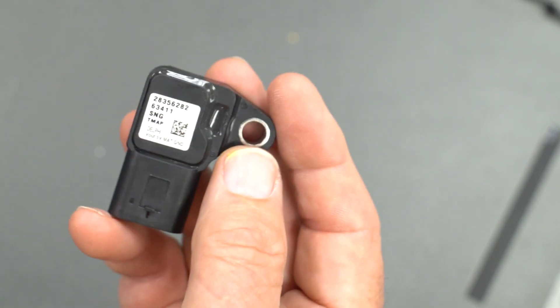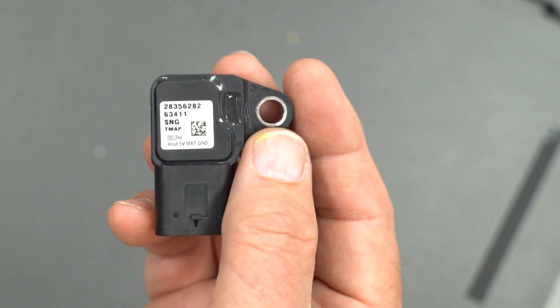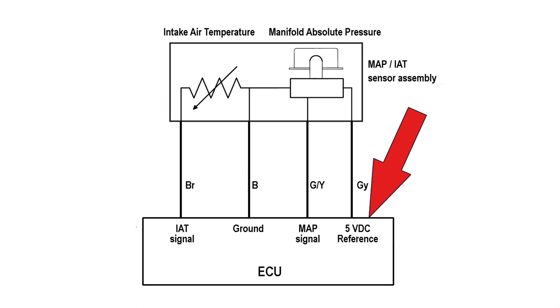The intake air temperature sensor is included in the MAP sensor assembly, which has four wires: 5-volt DC reference voltage, a signal wire for the MAP sensor, a common ground wire which is black, and the intake air temperature signal wire which is brown.